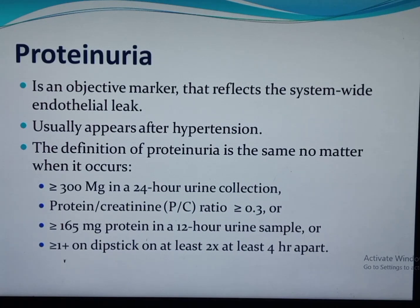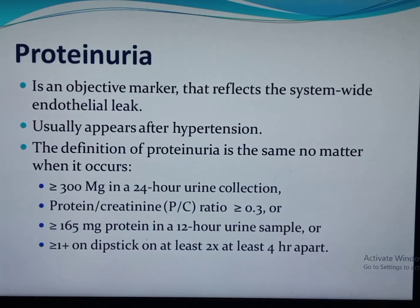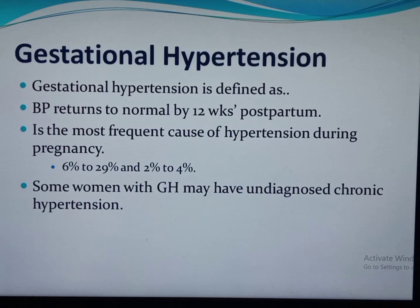A 12-hour urine protein greater than or equal to 165 mg can also be used. The qualitative test is urine dipstick greater than or equal to 1+ on at least two occasions four hours apart but not more than seven days. However, the dipstick is not a reliable measure of urine protein, as several factors affect urinary protein concentration, including contamination with blood, bacteria, amniotic fluid, vaginal discharge, urinary specific gravity, pH, exercise, and posture. The quantitative tests are therefore preferred.